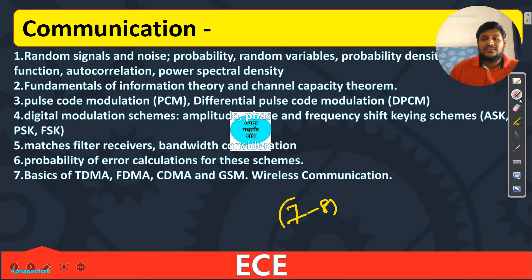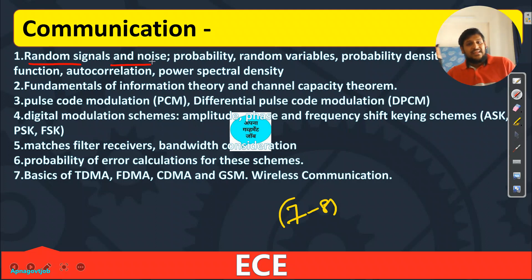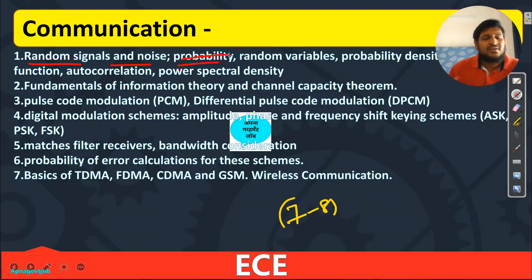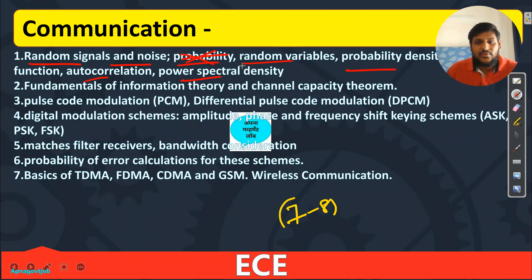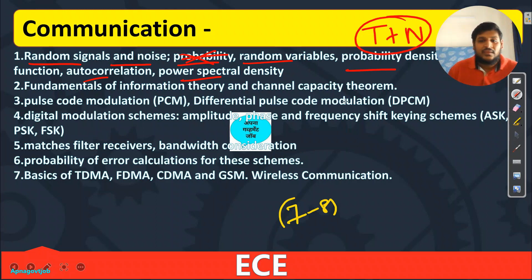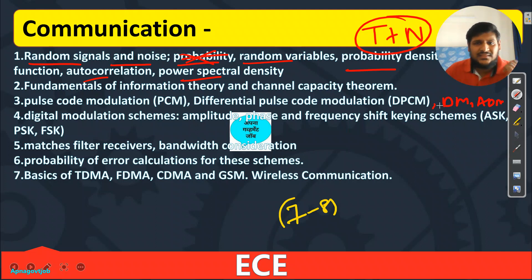In Digital Communication: first, Random Signals and Noise — important for understanding further concepts like random variables, autocorrelation, and power spectral density. Study both theoretical and numerical aspects. Then Pulse Code Modulation (PCM), DPCM — also add Delta Modulation (DM) and Adaptive DM here. For DM, theory and comparison only; basic problems will be solvable.